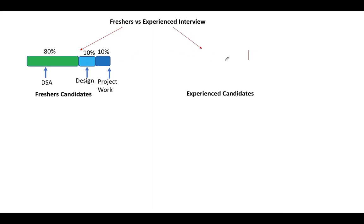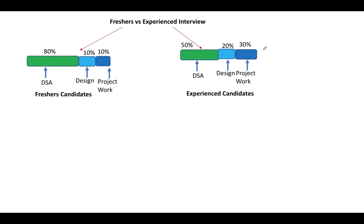For experienced candidates, you can expect approximately 50 percent of questions on DSA — data structures and algorithms — followed by 20 percent on design, which includes both OOP design and system design. Then 30 percent of questions will be on project work from your past companies. So the pattern is a little bit different for freshers versus experienced candidates.